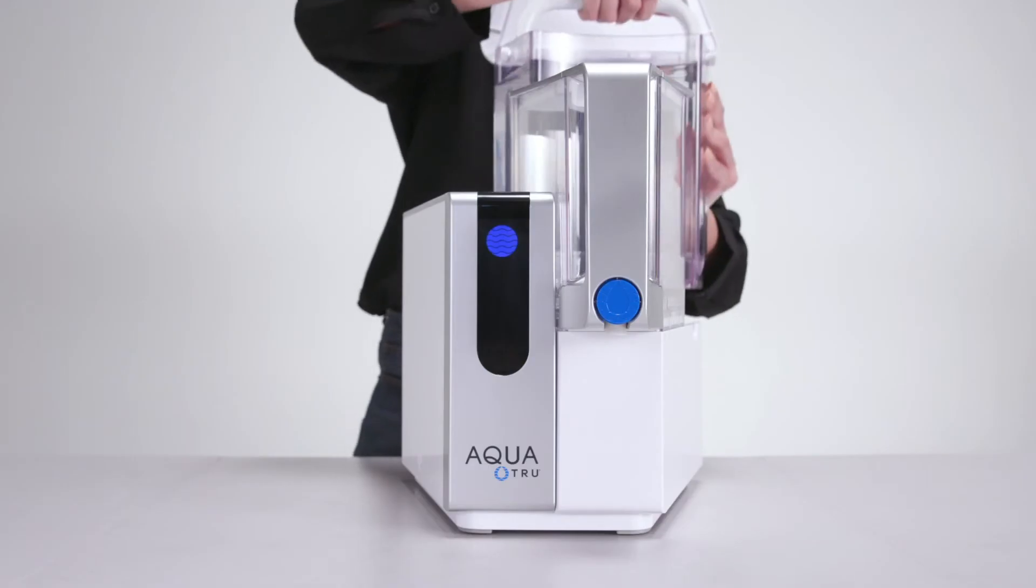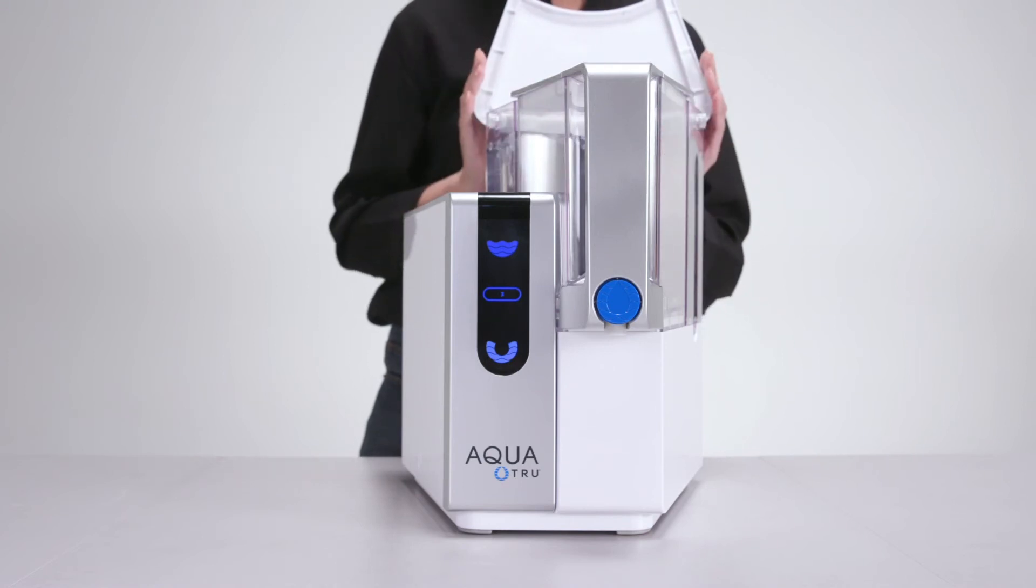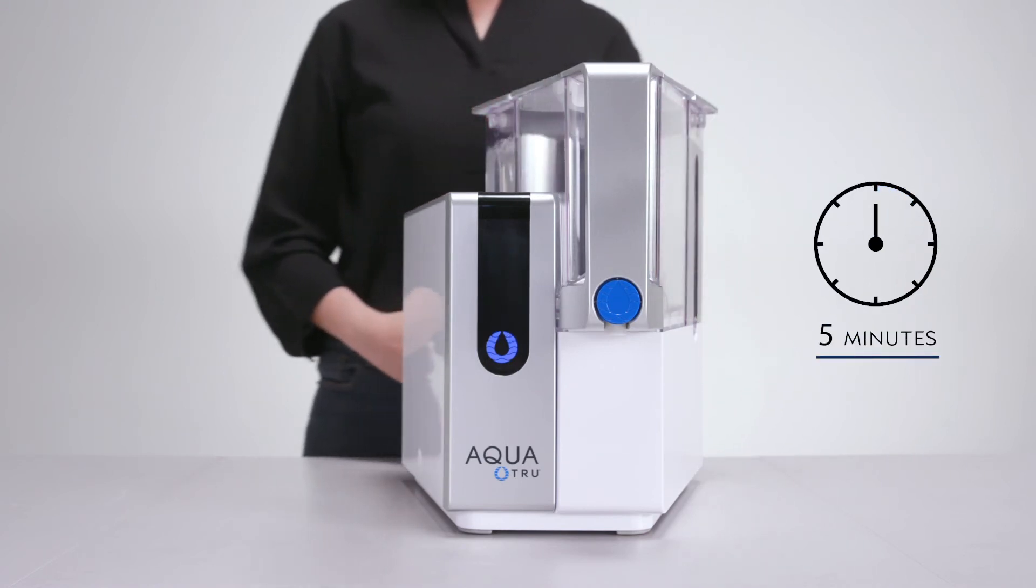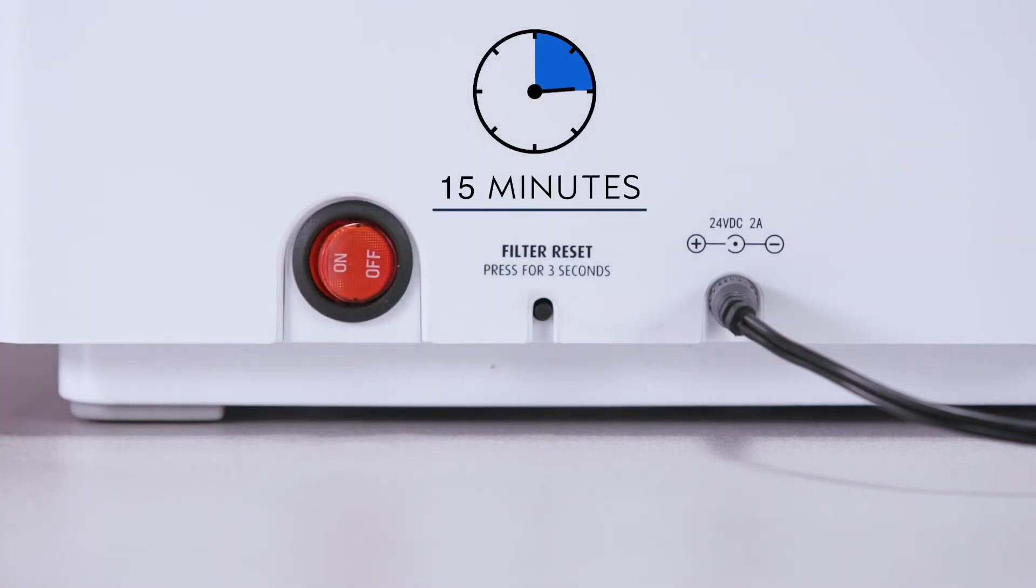Place the tap water tank on the AquaTrue base and let it start filtering. After about five minutes of filtering, turn off the power and let it sit and soak for 15 minutes.